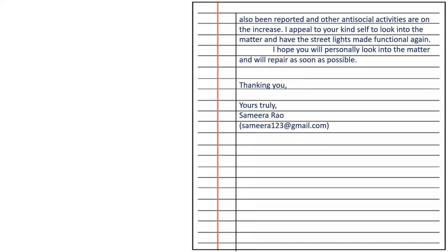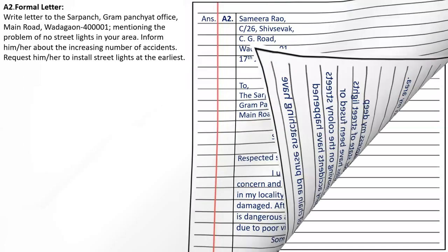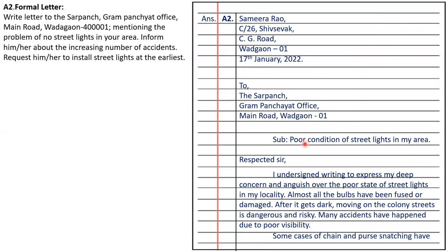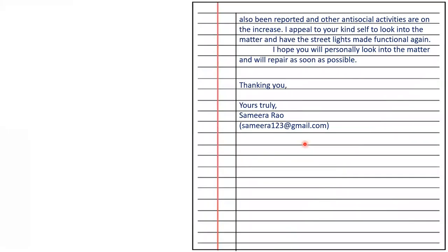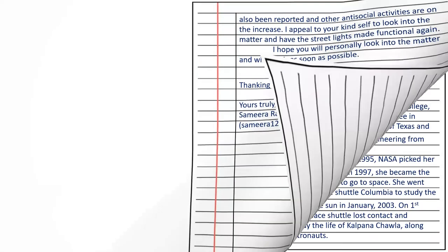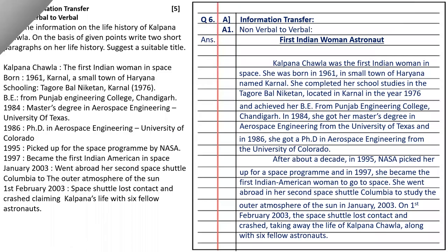Students, you have to write it in three paragraphs: first an introductory para, second in detail, and last the closing para. The next question is information transfer — non-verbal to verbal. Read the information on the life history of Kalpana Chawla and based on the given points, write two short paragraphs on her life history and suggest a suitable title.